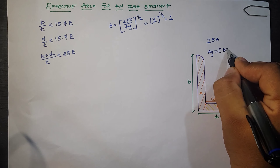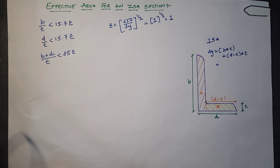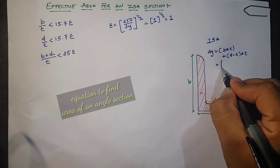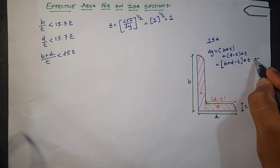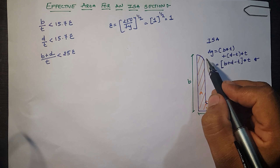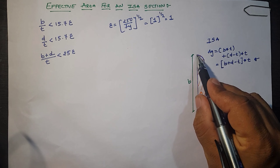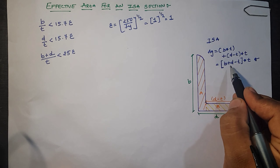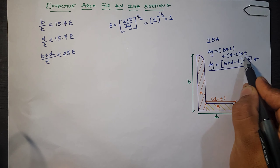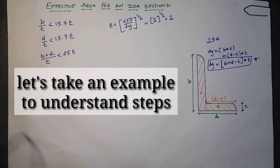The total gross area equation becomes: Ag = b×t + (d − t)×t, which simplifies to Ag = (b + d − t) × t. This is an approximate equation because in the actual ISA section the corners and joints are curved, not square. However, the error is very small and negligible, so this equation can be used when the steel table is not available.